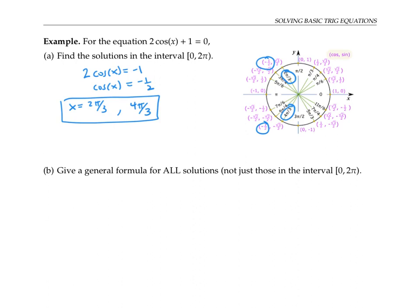But there are more angles, because we can always take one of these angles and add multiples of two pi to it. So if I want to find all solutions, I can take these two principal solutions — two pi over three and four pi over three — and simply add multiples of two pi to them.